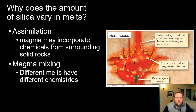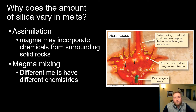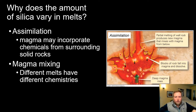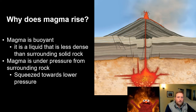Another way that silica content varies in the melt is through assimilation. You have this hot molten magma traveling upward through the upper part of the crust, melting and reacting with surrounding rocks — it assimilates the chemistry of those surrounding rocks into the melt. This could happen by melting along a wall, or if a block of rock falls off into the magma chamber and interacts with that hot magma. Finally, you can have magma mixing — different bodies of magma moving up through the mantle and crust interact with each other, combining into something with different chemistry.